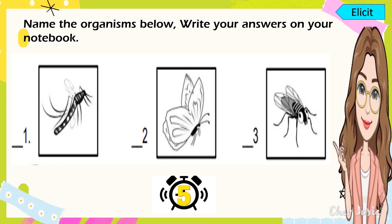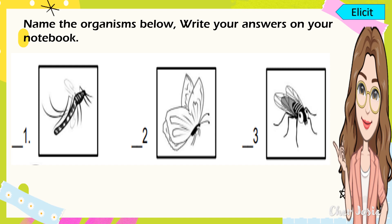For a review, kindly name the organisms shown below. Write your answers on your notebook. Here are the answers: for number 1 we have mosquito, number 2 we have butterfly, and number 3 fly.